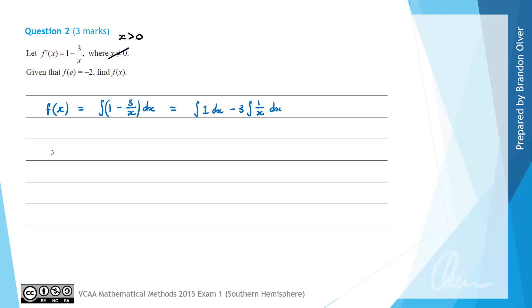Therefore we know that f(x) is going to equal, and the antiderivative of 1 is simply x, and then we have -3 times the antiderivative of 1/x which is log_e(x). And then we're going to have a +c term which is a constant of integration.